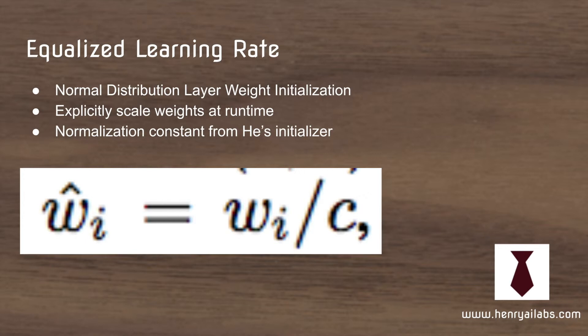The equalized learning rate is an important idea because a lot of the time when you see models with cascading layers or adding new layers, they have some kind of learning rate scheduler — the newly added layer might have a learning rate of 0.001, whereas the already trained layers have a much smaller learning rate.